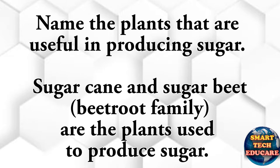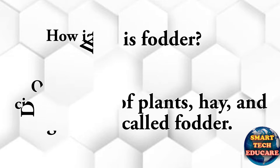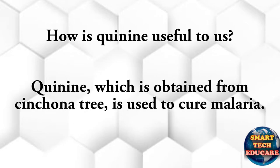Name the plants that are useful in producing sugar. Sugarcane and sugar beet are the plants used to produce sugar. What is fodder? Dried stems of plants, hay and grass are called fodder.